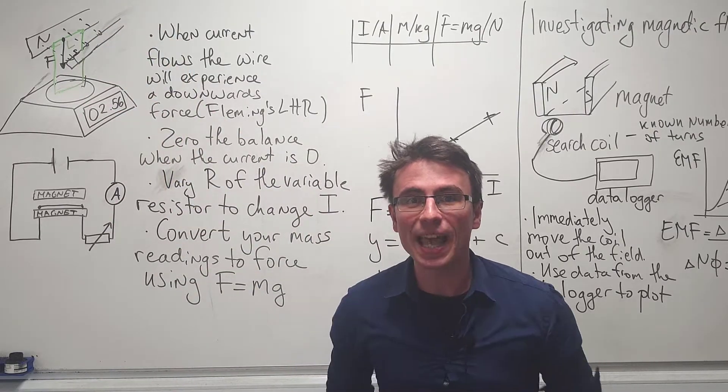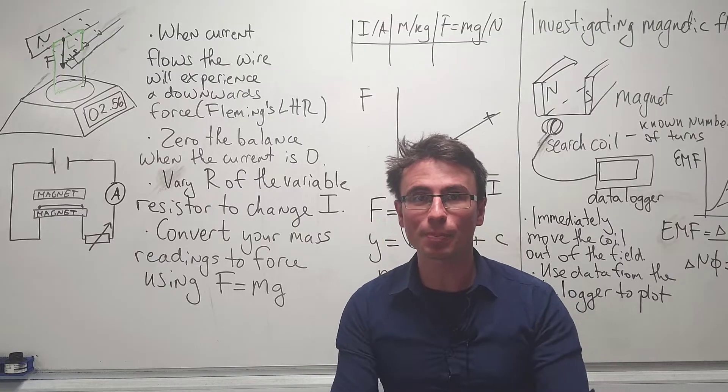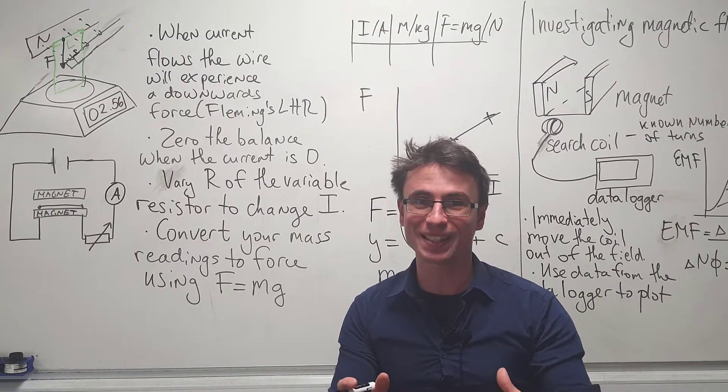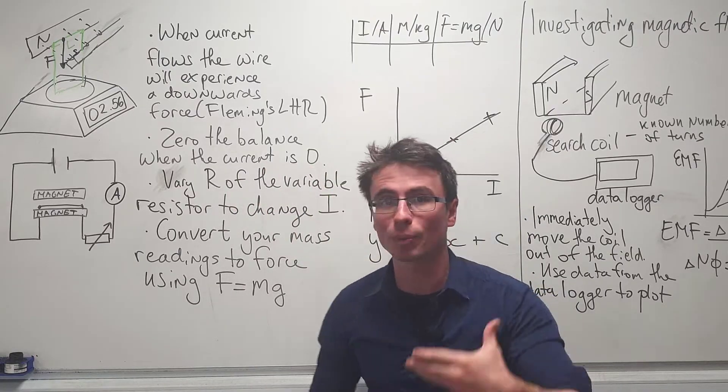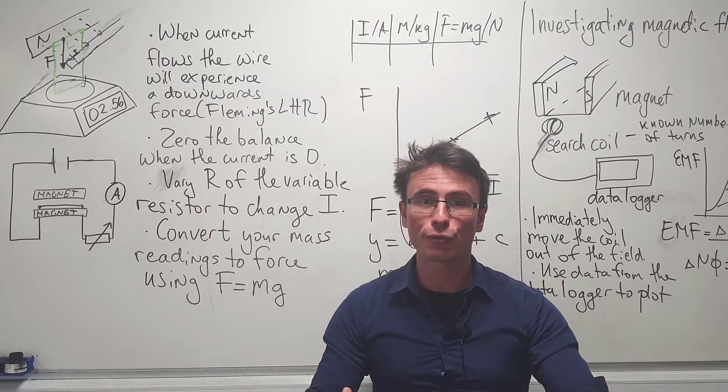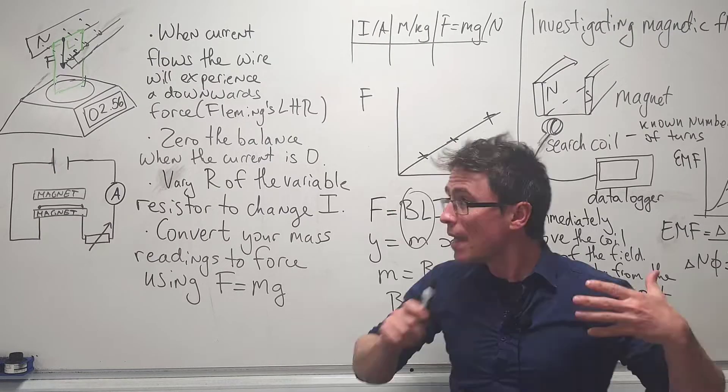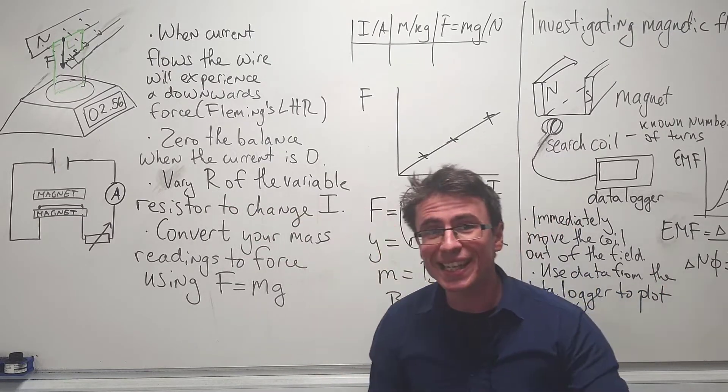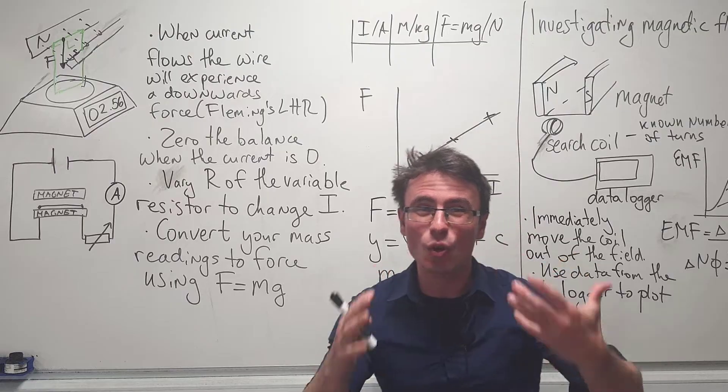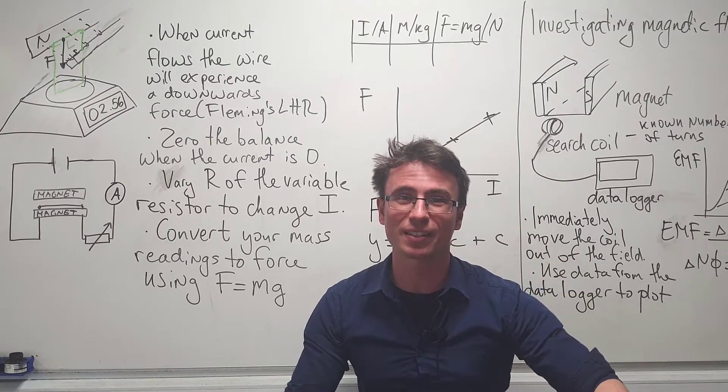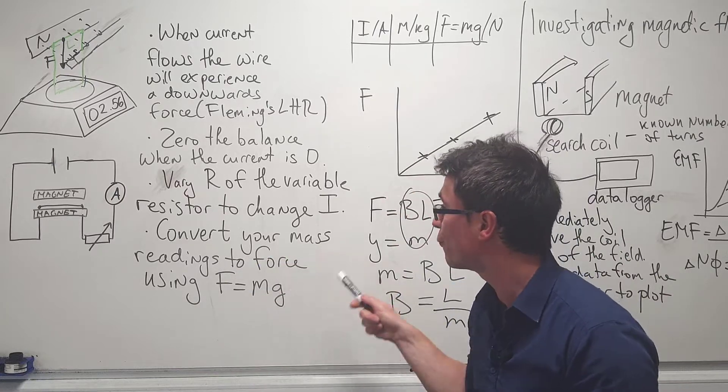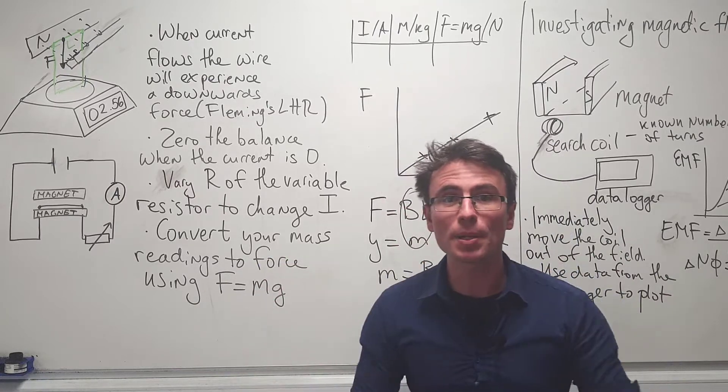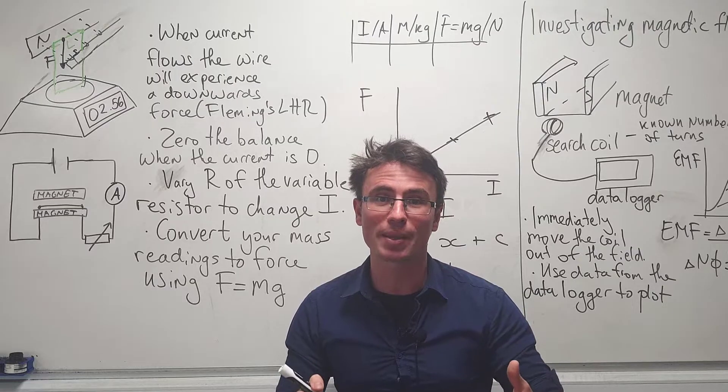We can use this setup to work out experimentally the magnetic flux density B. Before we start, it'll be very important to zero the balance when the current is zero in order to avoid any systematic errors. Then we're going to vary the resistance of the variable resistor in order to change the current. We're going to be measuring the mass readings and then we're going to be converting them to force simply by using F equals mg.